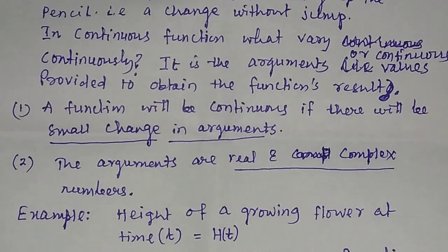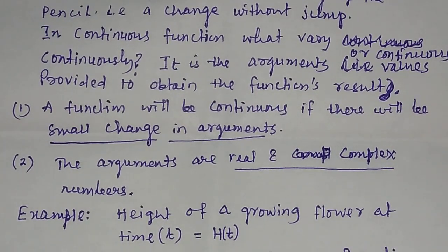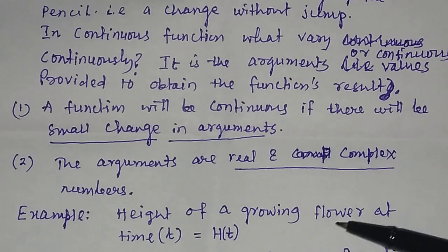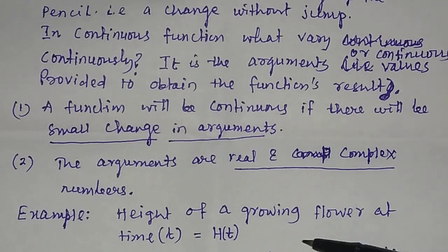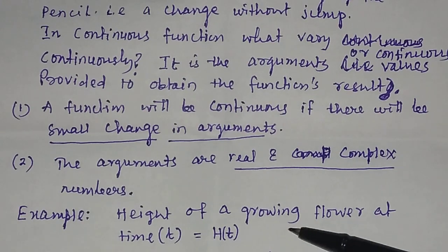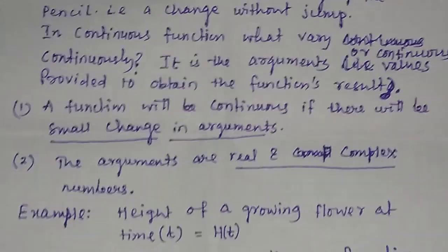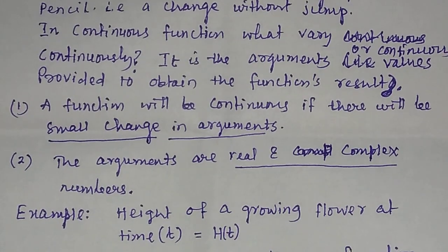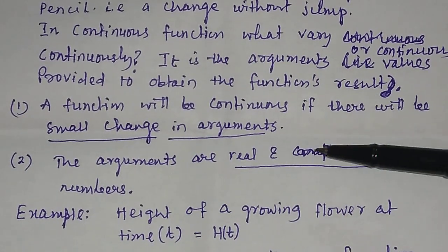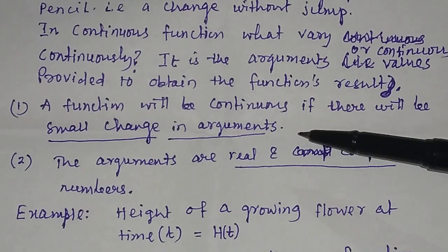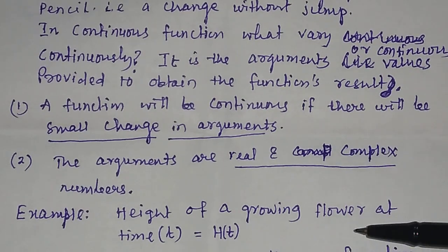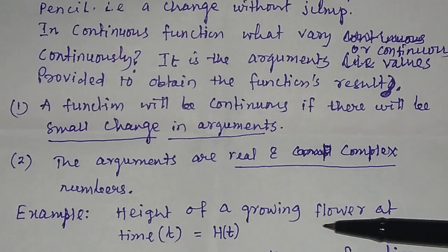What is an example of a continuous function? Suppose the height of a growing flower at time t — this is an example of a continuous function. Because a growing flower changes its height; there is a small change in the height of a growing flower. That is why the height of a growing flower is a continuous function.